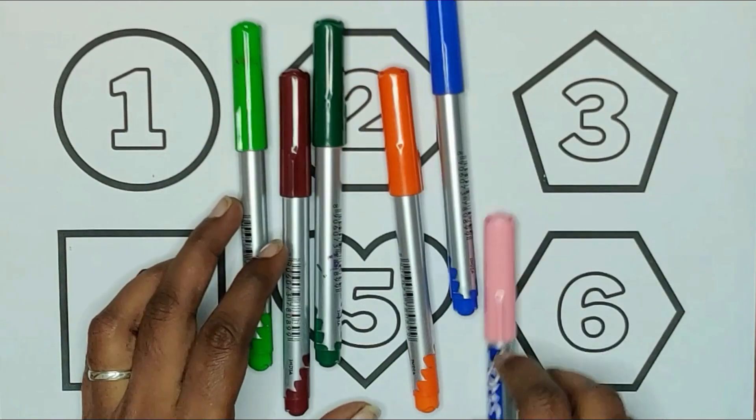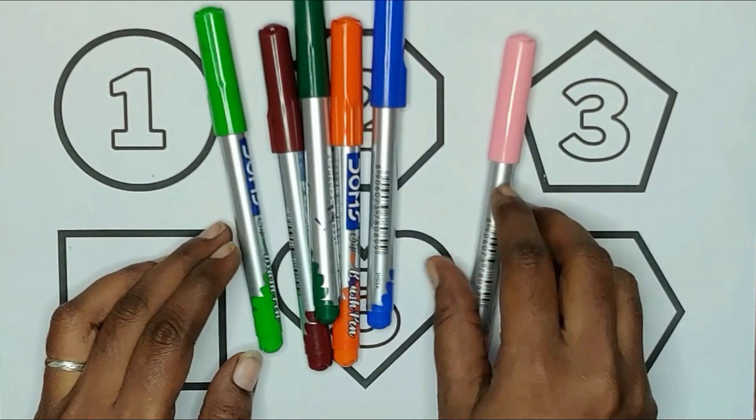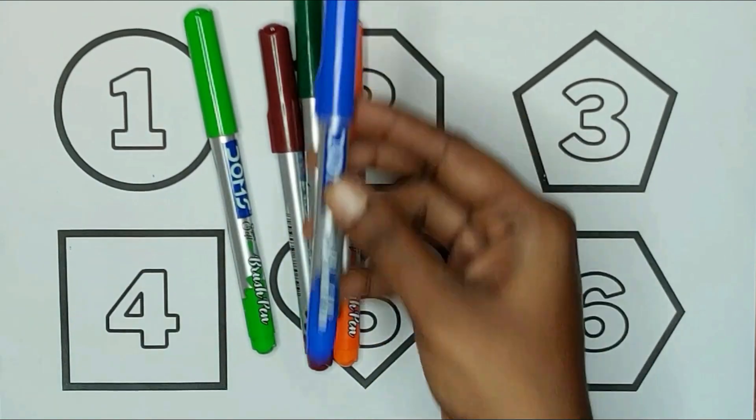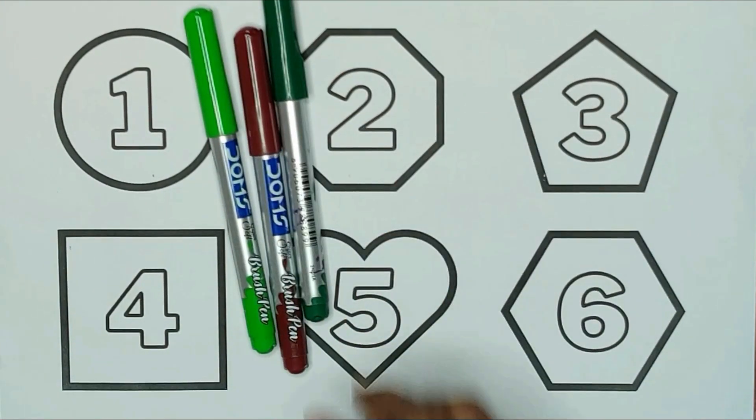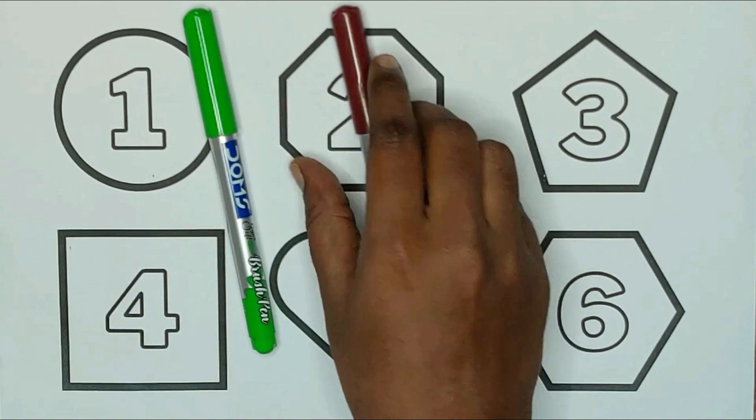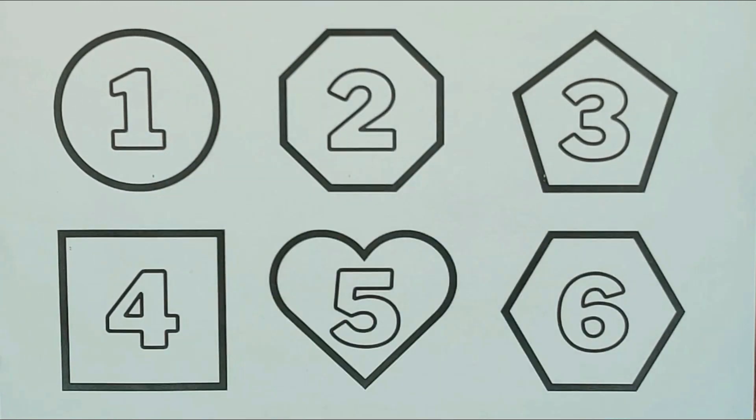Today we are learning numbers and shapes with colors. Pink color, blue color, orange color, green color, brown color, and a light green color.